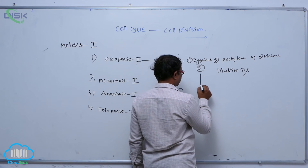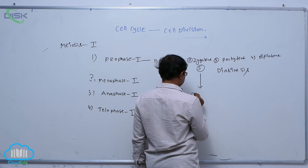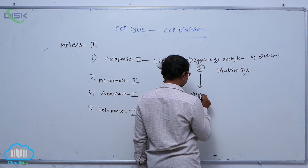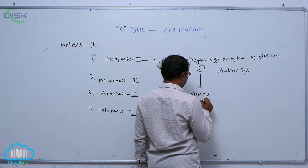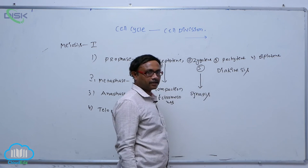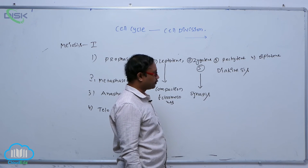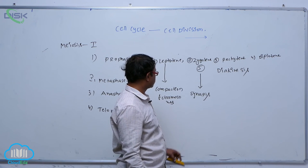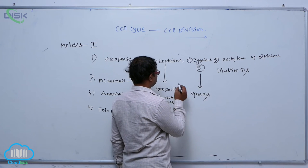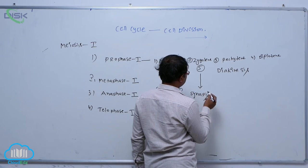What is the key point of zygotene? Synapsis. I also explained before that pairing of homologous chromosomes by synaptonemal complex, that is known as synapsis. So these are the key points about zygotene.